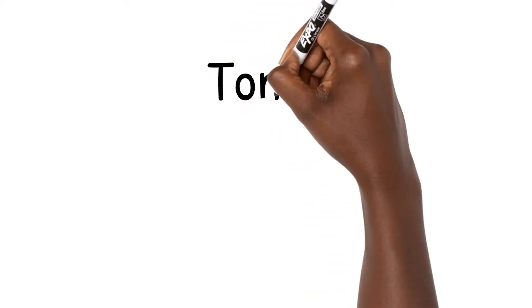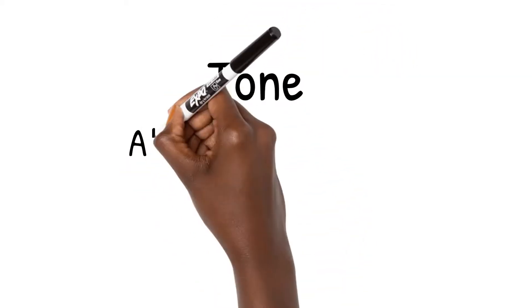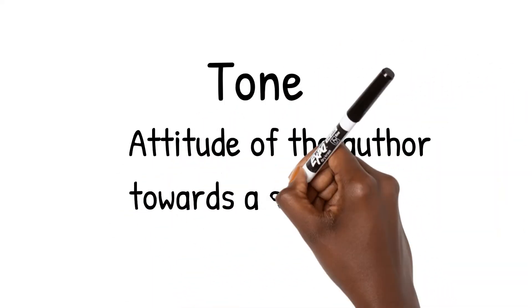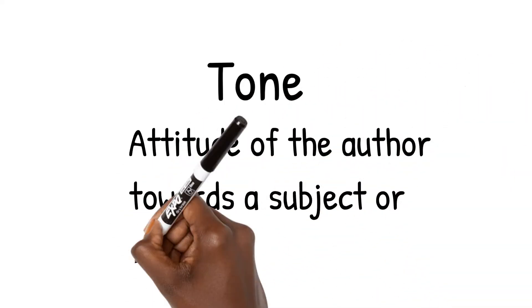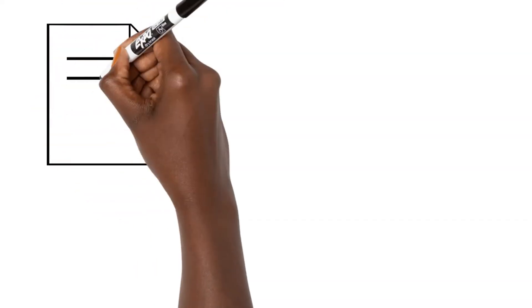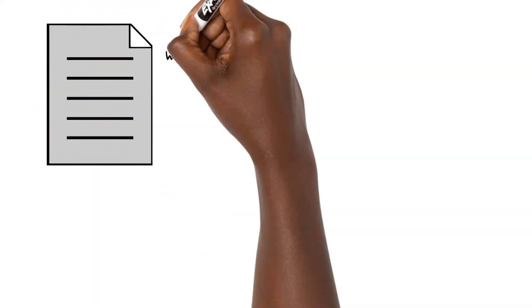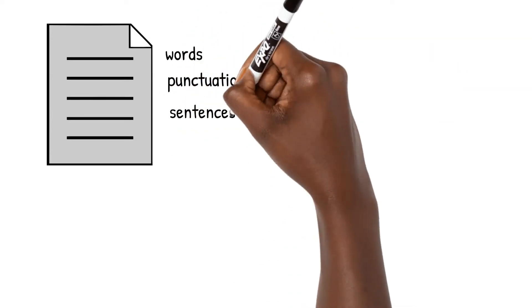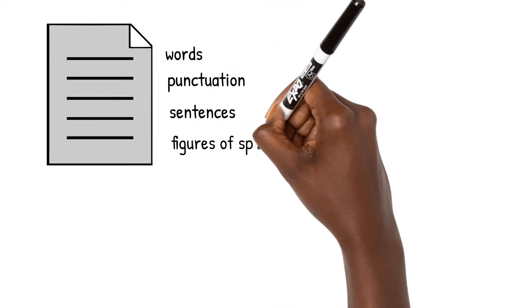In literature, tone is the attitude of the author towards the subject or the audience of a piece of writing. A writer can convey tone through different things such as words, punctuation, sentences, and figures of speech.